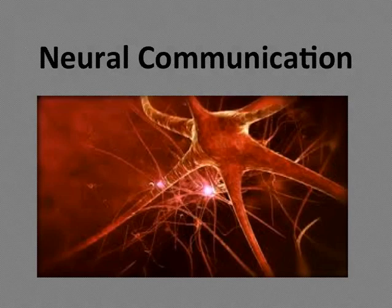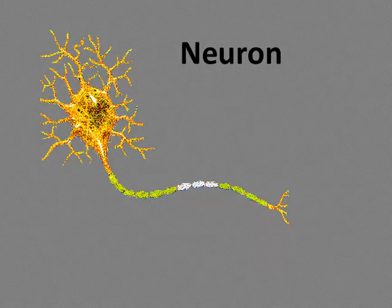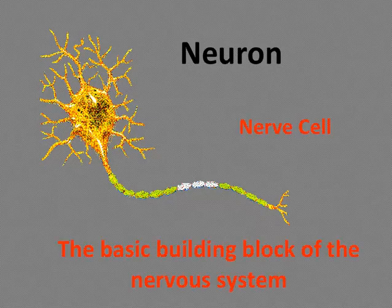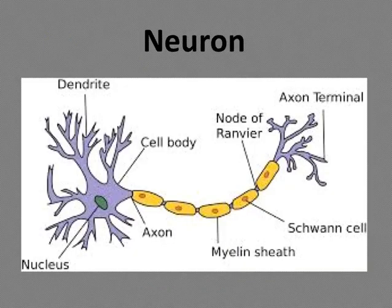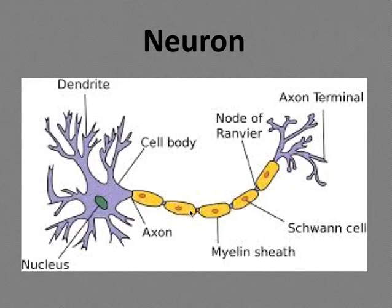First we will be learning about neural communication. Our nervous system plays a vital role in how we think and feel, and the neuron is the basic building block of the nervous system — it is the nerve cell. A neuron consists of a cell body and branching fibers. The dendrite fibers receive information from sensory receptors or other neurons and conduct them toward the cell body. The axon fibers pass that information along to other neurons or muscle glands, via the axon terminals.